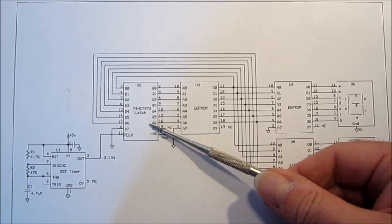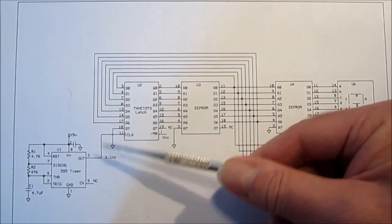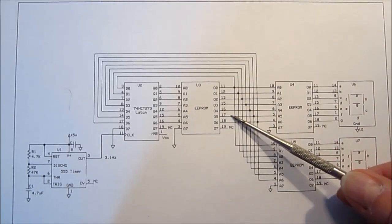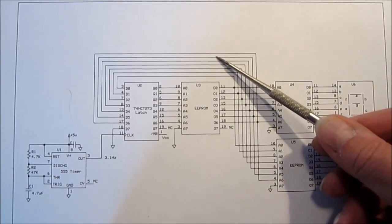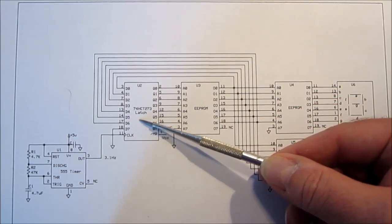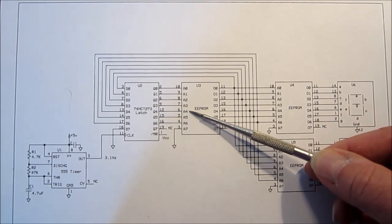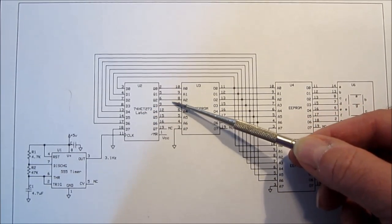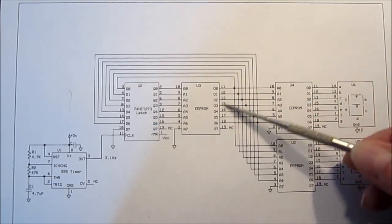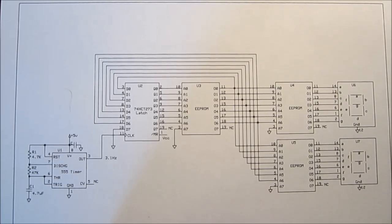So this throughput here — we have our latch and this is our state machine, these three chips. We have our latch taking the output of the data output of this EEPROM, bringing it back around as the clock strikes, latching it over, and this just continues to walk up through all the memory locations because of the way this is programmed.